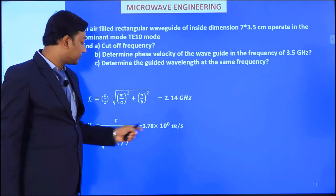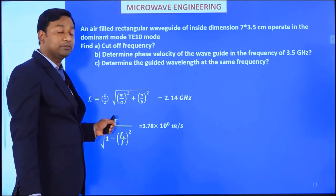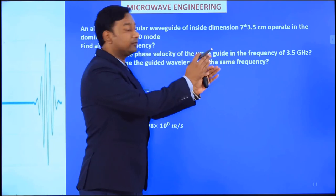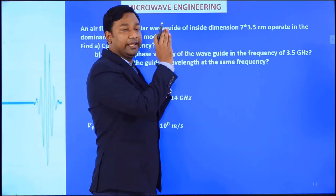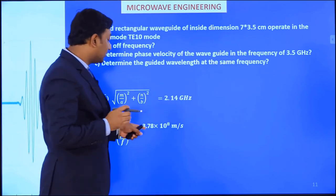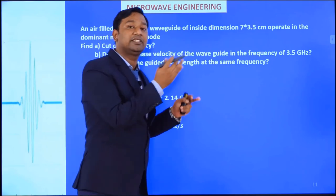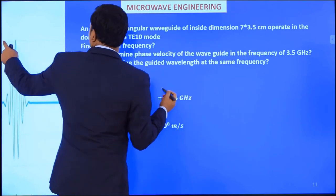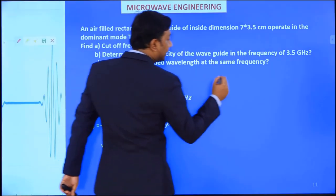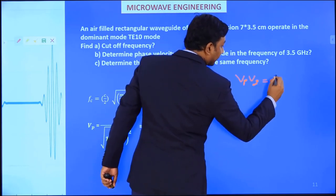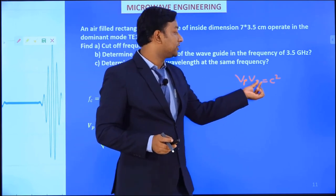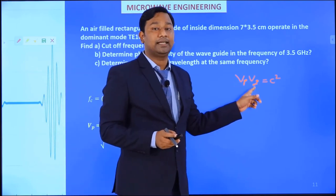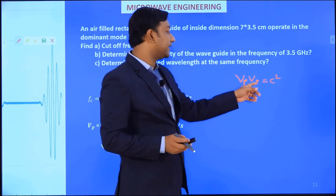You may have a doubt that the phase velocity is greater than the speed of light. But phase velocity here refers to the phase change, not energy transport. The group velocity is the actual propagation velocity of the wave from one point to another, which is less than the speed of light. We can also prove that vp × vg = c².